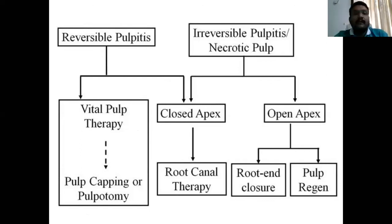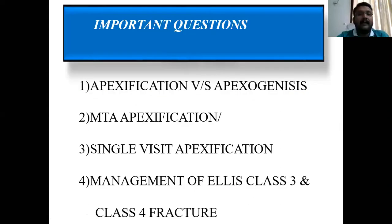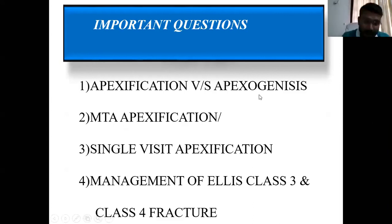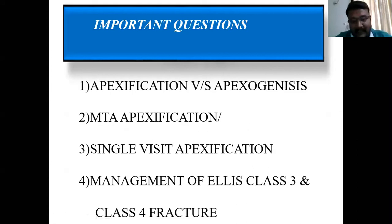These are the three topics covered today. Exam questions you can expect: apexification versus apexogenesis — a four-mark or eight-mark question; MTA apexification — short essay question; single-visit apexification; and management of Ellis class three and class four fractures, where the same procedure will be repeated.